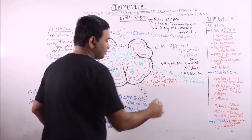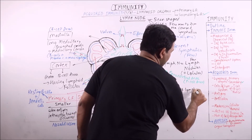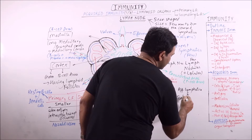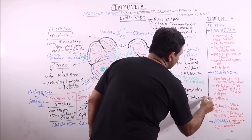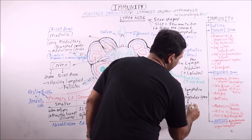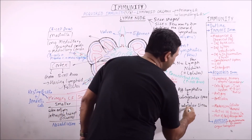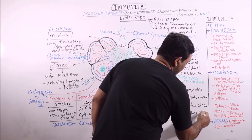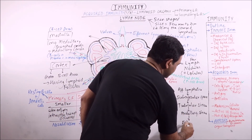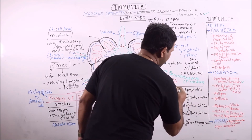The flow of lymph starts from the afferent lymphatics, then moves to the subcapsular space, then to the trabecular sinus. The trabecular sinus continues through the cortical and paracortical area, and finally leads to the medullary sinus, which pours the lymph into the efferent lymphatics.